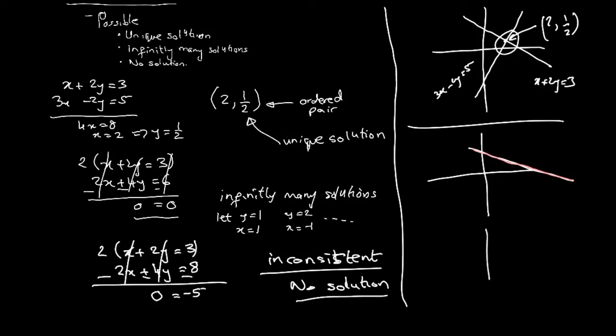The last case can be interpreted graphically as follows. Here's the same equation as above, approximately the same. But the other one is parallel to it. These are two parallel lines, which means they never intersect each other. There are no points of intersection. This is the no solution case. This is infinitely many solutions, and this is unique solution.